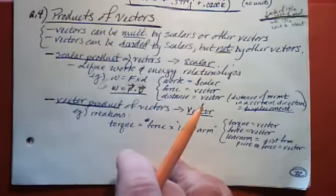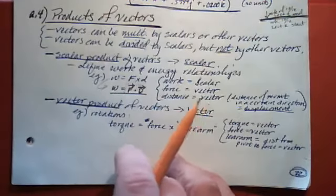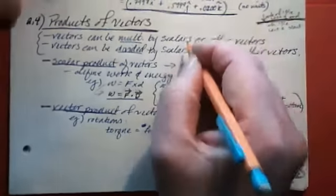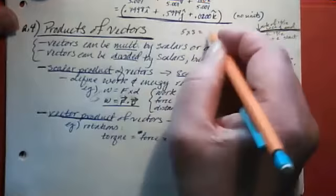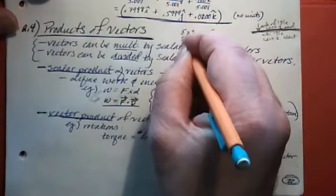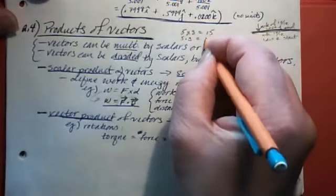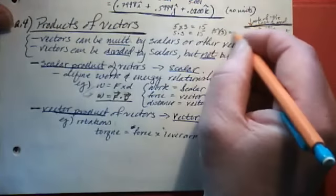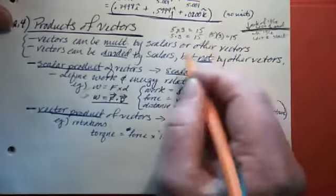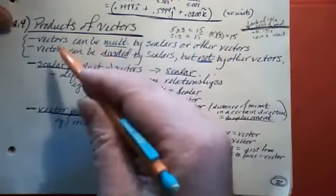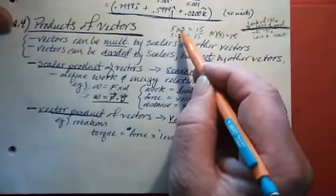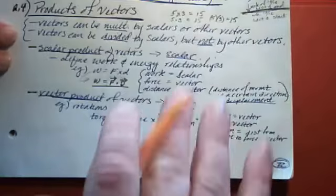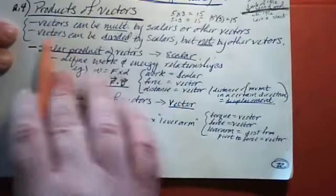There are different ways of representing how to multiply vectors together, which will make a big difference, unlike with just regular numbers. With regular numbers, 5×3, 5·3, or 5(3) all mean five times three and the answer is 15 — it doesn't matter how you represent it. With vectors, it does matter how you represent it. An X means a different thing from a dot, and you have to keep them straight because the result will be different for those two representations.